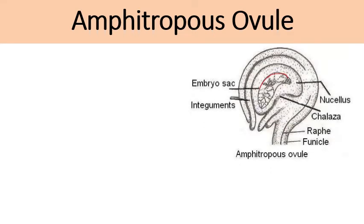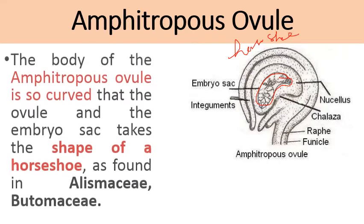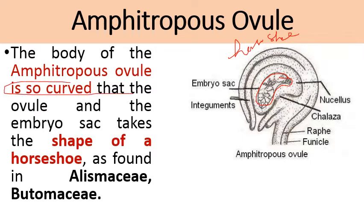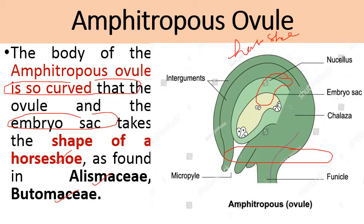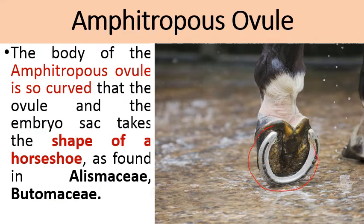Next is the amphitropous ovule. In this type, the body of the ovule as well as the embryo sac is so curved that it gives the appearance of a horseshoe shape. Both the ovule body and the embryo sac take the shape of a horseshoe. It is found in members of the families Alismaceae and Butomaceae. The funicle, chalazal end, embryo sac — which is also curved — and two integuments are visible, with the micropyle opening present, all resembling a horseshoe.